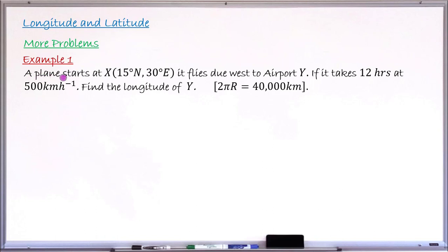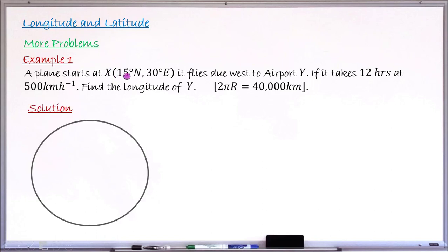The first problem says: a plane starts at point X, located at latitude 15° North and longitude 30° East. The plane flies due west to another airport Y, taking 12 hours at a speed of 500 kilometers per hour. The question asks us to find the longitude of airport Y. Airport X is on latitude 15° North and longitude 30° East.